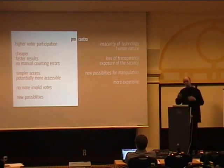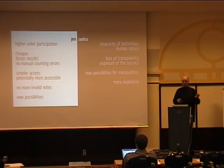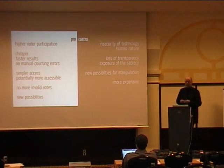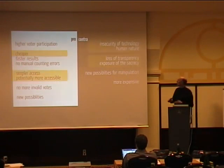Then you have the arguments against e-voting: the insecurity of technology and human nature, a loss of transparency and exposure of secrecy, new possibilities for manipulation through use of technology that is manipulatable. And to contrast the 'cheaper' argument, the argument against voting is that it's actually more expensive. I'll look at two arguments from each side.